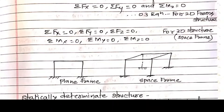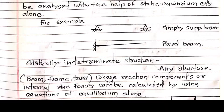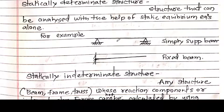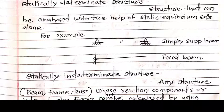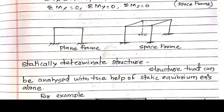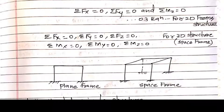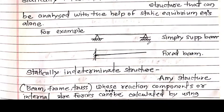Now what is meant by static indeterminacy? This is a simply supported beam. Suppose we have to calculate the unknown reactions. This is a hinge support, so there will be 2 reactions. This is a roller support, so there will be only 1 reaction. Total reactions for this beam will be 3. We have 3 equations of static equilibrium — summation Fx = 0, Fy = 0, and M = 0. So 3 equations and 3 reactions — it can be analyzed.